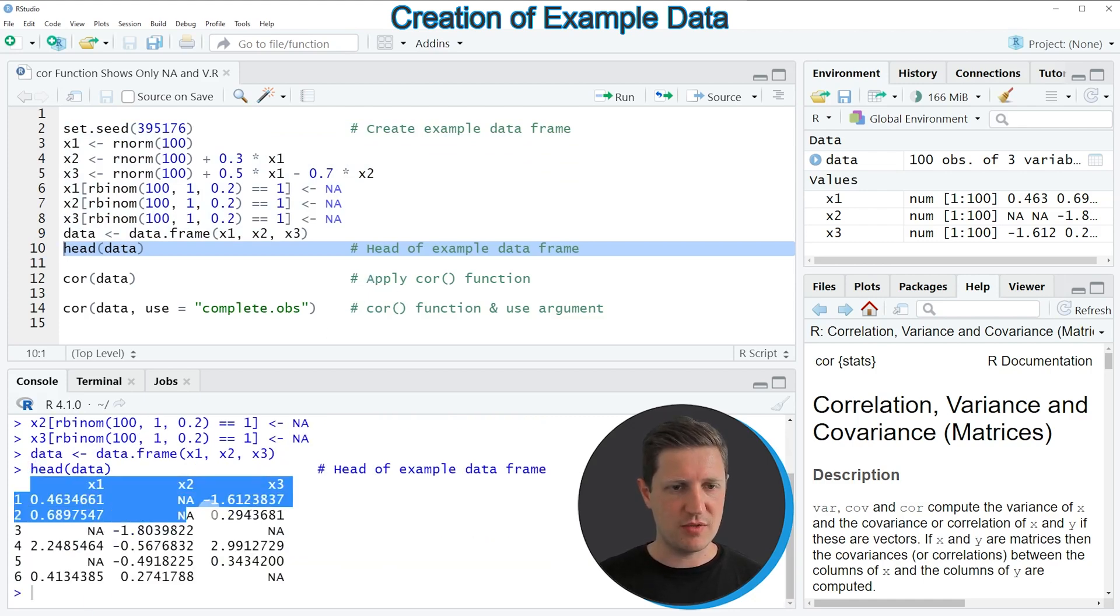Then you can see at the bottom in the RStudio console that our example data contains three columns x1, x2 and x3. All of these columns contain numeric values. However, you can also see that each of the columns contains NA values as well.